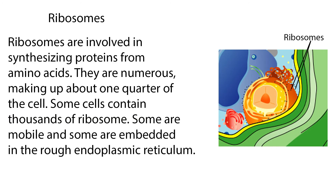Ribosomes are involved in synthesizing proteins from amino acids. They are numerous, making up about one quarter of the cell. Some cells contain thousands of ribosomes. Some are mobile, and some are embedded in the rough endoplasmic reticulum.